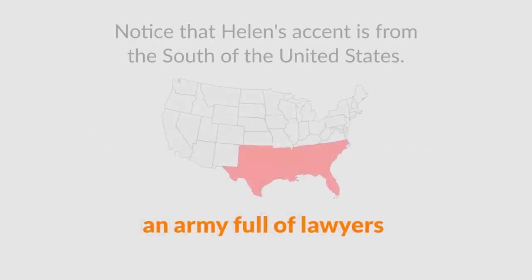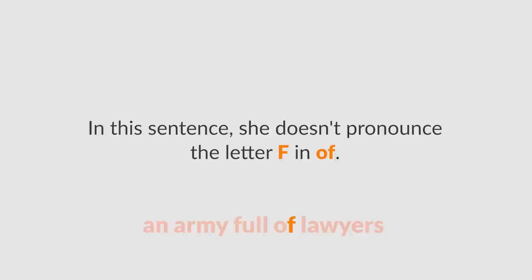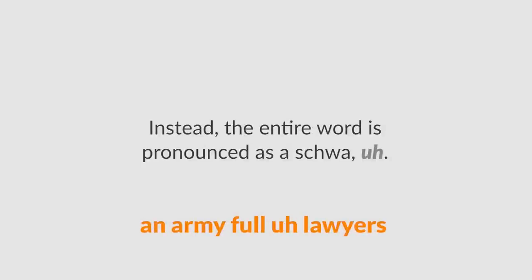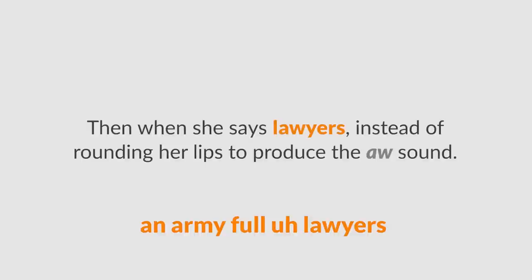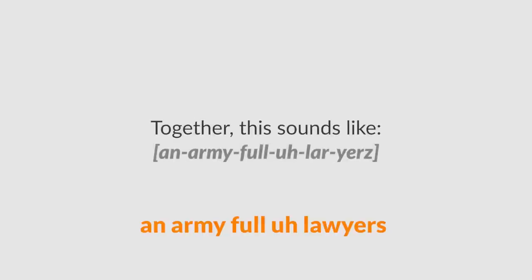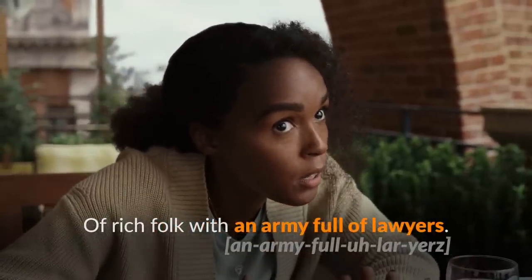Let's look at the connected speech here. Notice that Helen's accent is from the south of the United States. In this sentence, she doesn't pronounce the letter F in 'of.' Instead, the entire word is pronounced as a schwa: 'uh.' Then, when she says 'lawyers,' instead of rounding her lips to produce the 'ah' sound, her jaw is relaxed and instead we hear 'ah.' Together, this sounds like 'an army full of liars': 'for rich folk with an army full of liars.'